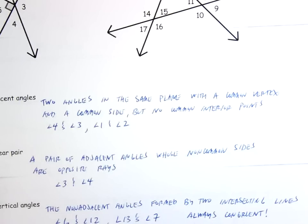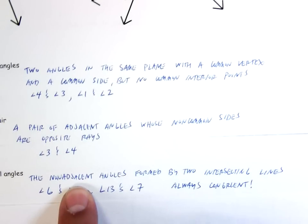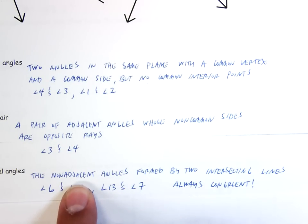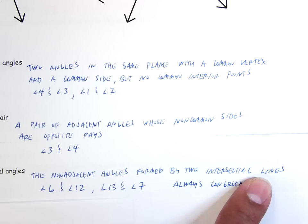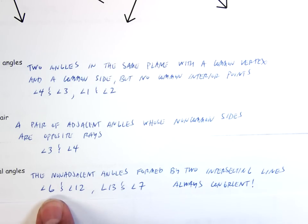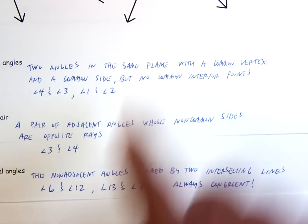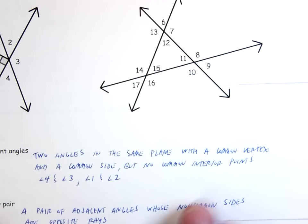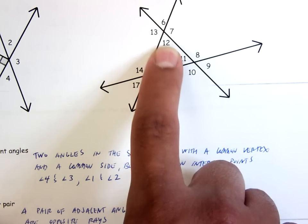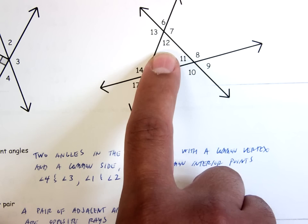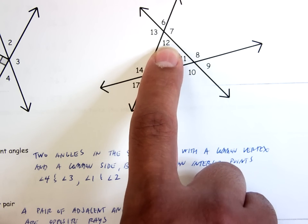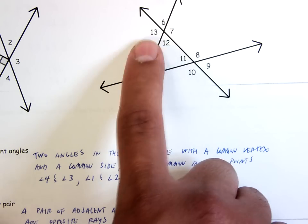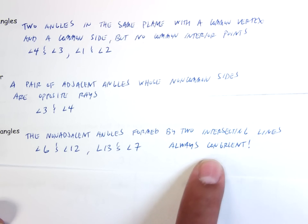Vertical angles: two non-adjacent angles, so they don't share a side, formed by two intersecting lines. Angle six and angle twelve — they're opposite from each other. Angle six and angle twelve are opposite angles — those are vertical angles. Seven and thirteen are also vertical angles. Note this is very important: vertical angles are always congruent to each other.